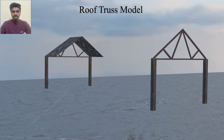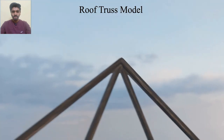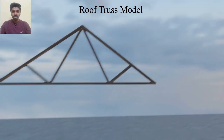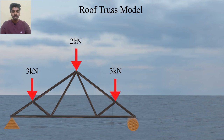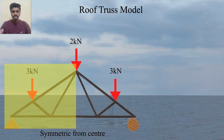We are assuming that due to dead load, a load of 2 kN is acting at the top joint of this truss, and the second and third joints from the top are getting 3 kN each. To analyze this structure means we have to find the forces in each member. You can observe that this structure is symmetric from both sides about the center, so if we analyze one side of this structure then we will automatically get the forces on the other side as well.